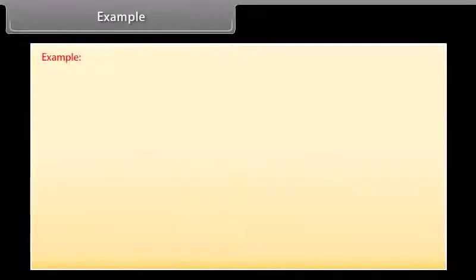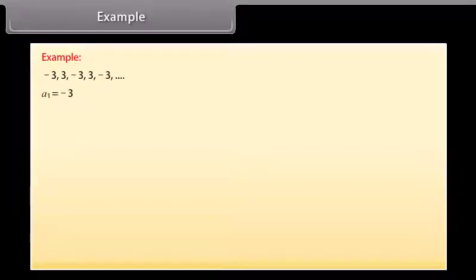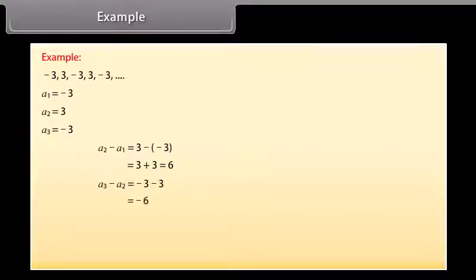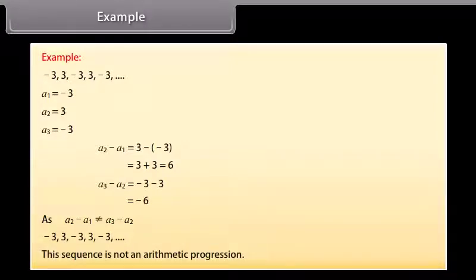Let us now solve an example. Observe this sequence and find out whether these numbers form an AP or not. Here a1 = -3, a2 = 3, a3 = -3, and so on. Now a2 - a1 = 3 - (-3) = 6. Also a3 - a2 = -3 - 3 = -6. Since a2 - a1 is not equal to a3 - a2, the given sequence is not an arithmetic progression.